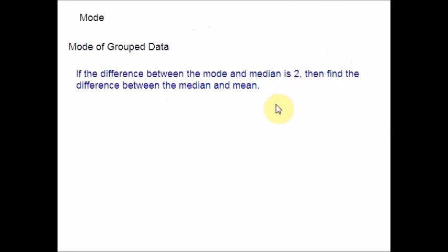So, here is the next example. If the difference between the mode and median is 2, then find the difference between the median and mean. Here, I would like to explain you one concept. Mean minus mode is nothing but three times mean minus median. This is just like a formula. We get this from the relationship between mean-median-mode. This is the relationship between mean-median-mode. You can note down this as a formula. Now, we can just simplify it.